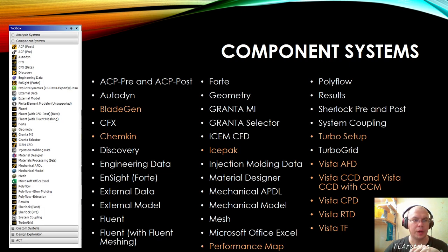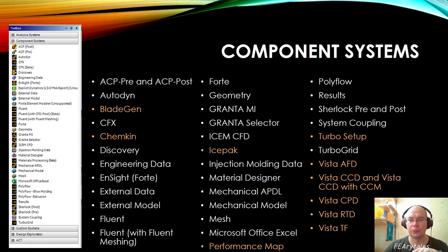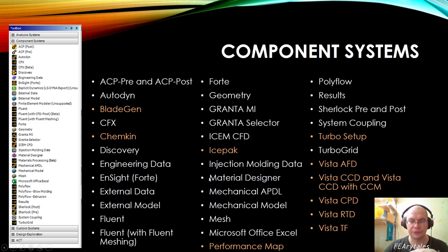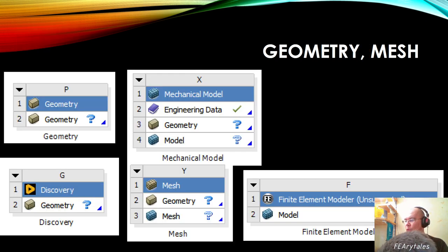Let's talk more about objects in the Component System. Here is a picture of how it looks on my computer — this is the full list of all objects from the Component System collection. White objects are present with my license; the brown or orange ones are absent due to licensing. In your case it may look different. We will talk about all these objects and applications. The first collection is for working with geometry and mesh.